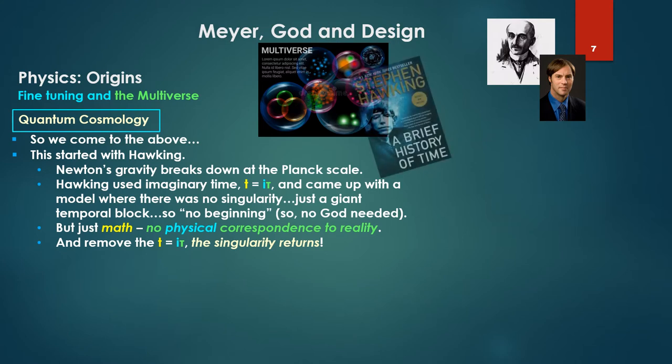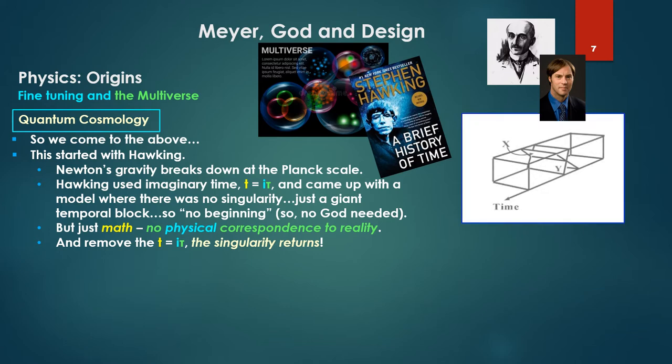So we come to quantum cosmology. This started with Hawking. The theory is Newton's gravity breaks down at the Planck scale. Hawking used an imaginary time t equals it, where i is the imaginary plane, and came up with a model where there was no singularity—just a top, a giant temporal block on the block time of special relativity. So an infinite block, therefore no beginning. No god needed to start the beginning. But the difficulty is all this is just math with no physical correspondence to reality. And even worse, remove the t equals it, and darn, the singularity returns.